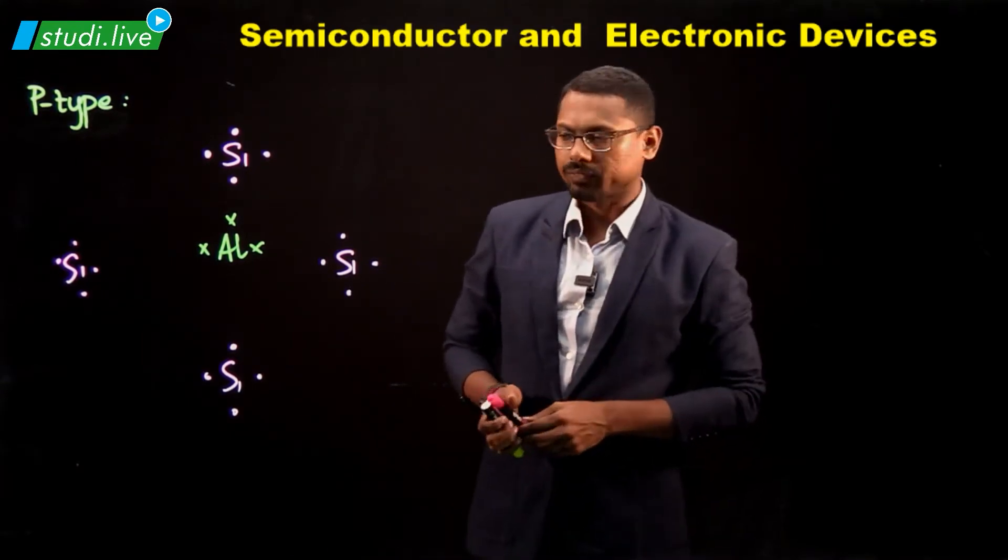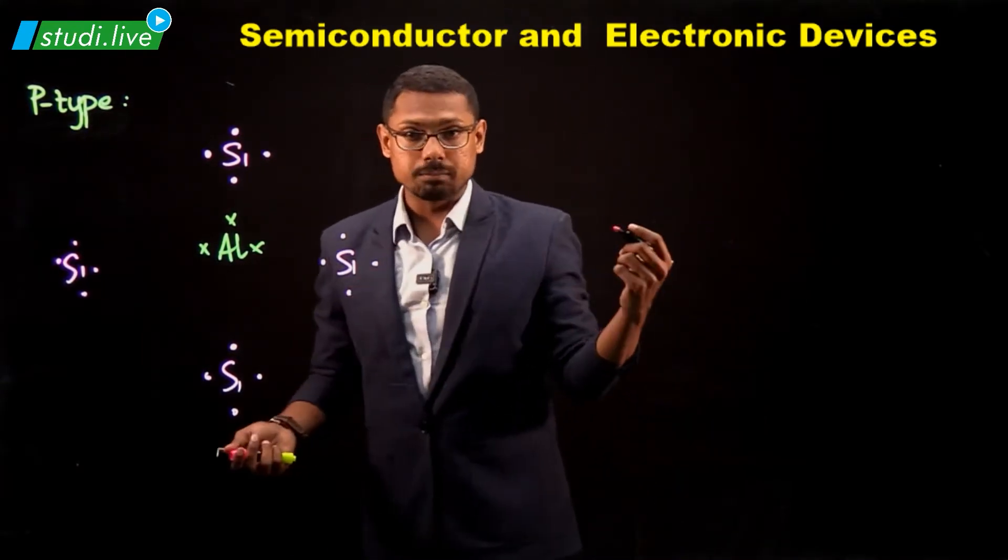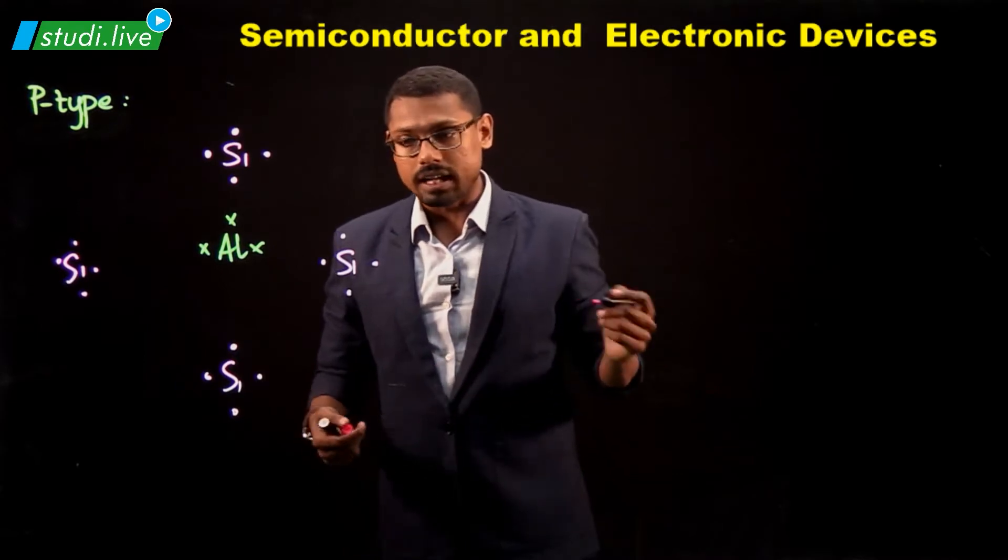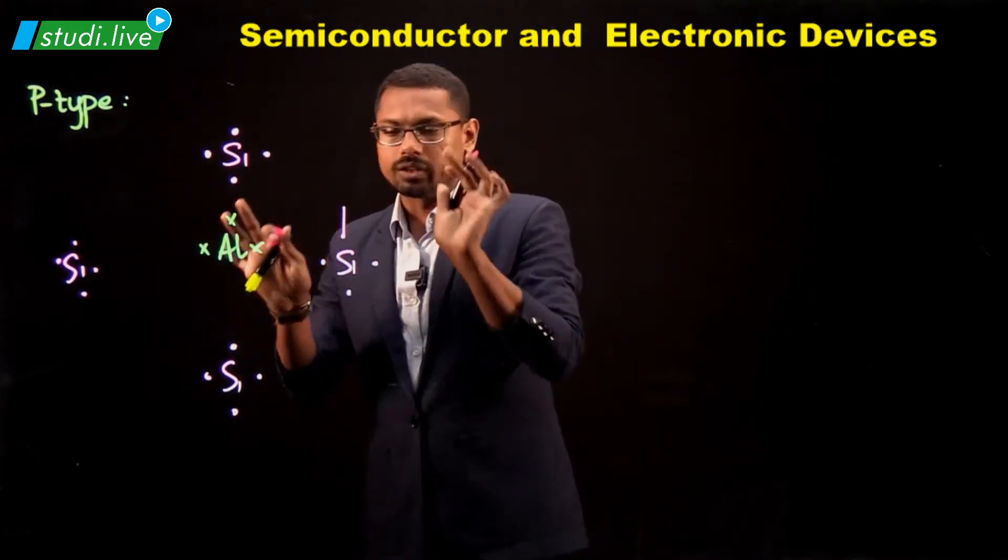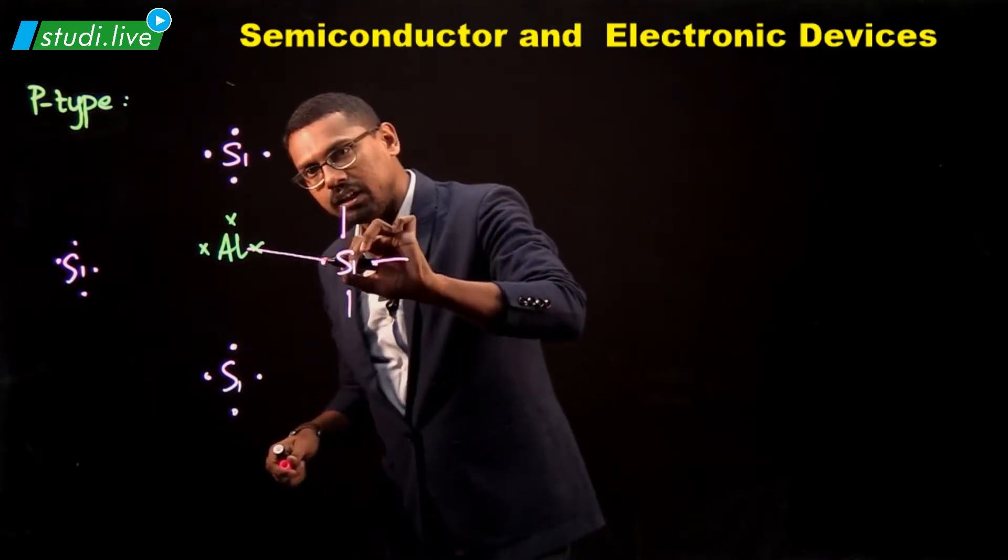What will happen now? As we know, silicon basically makes covalent bonds with other atoms. So here it can make a covalent bond with silicon over here. Here it is happy, here it is happy, here it is happy.